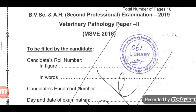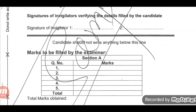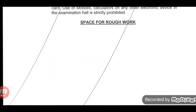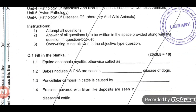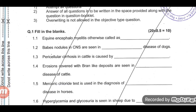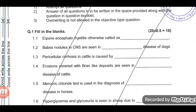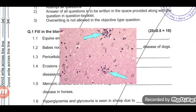Let's begin with the paper. We will start with the fill in the blanks. Question 1: Equine encephalomyelitis is otherwise called as sleeping sickness. Question 2: Babes nodules in the CNS are seen in rabies disease of dogs.